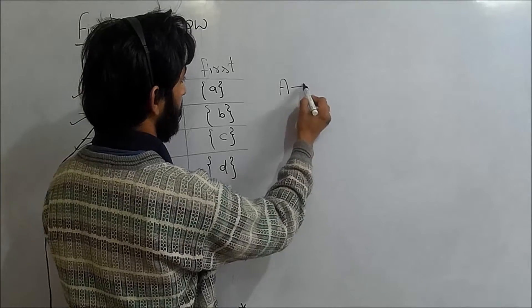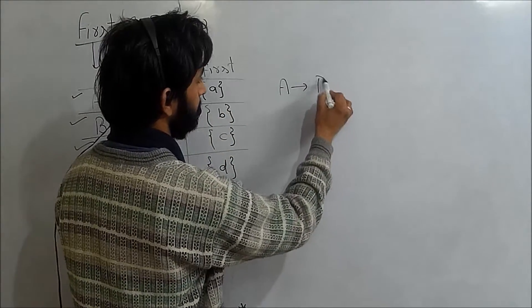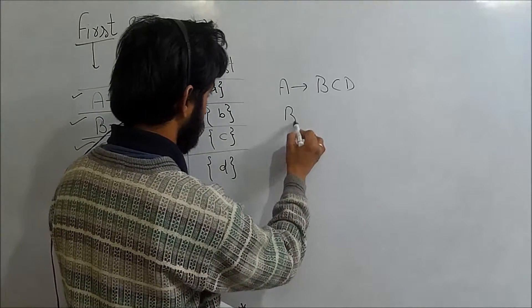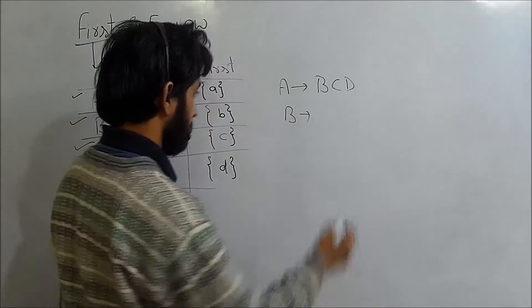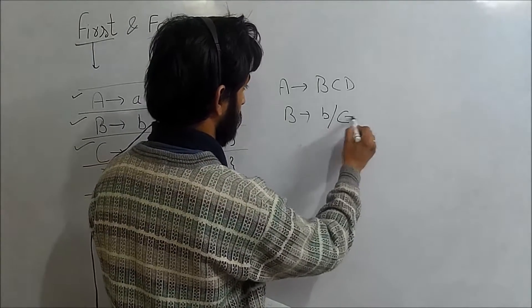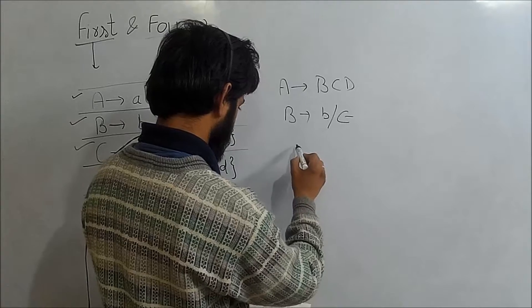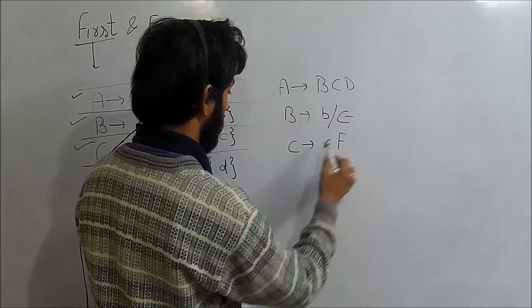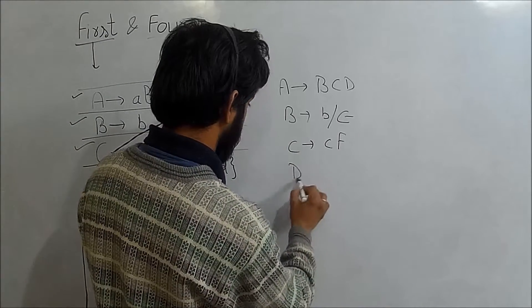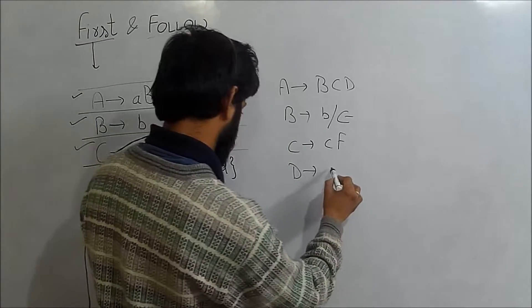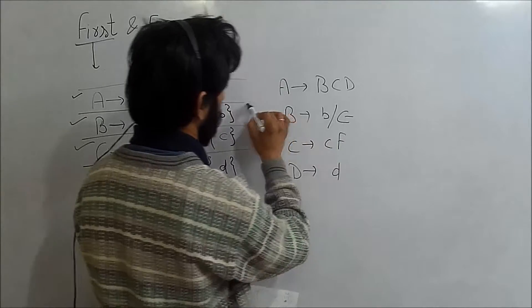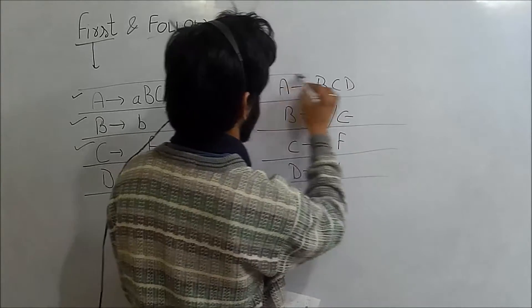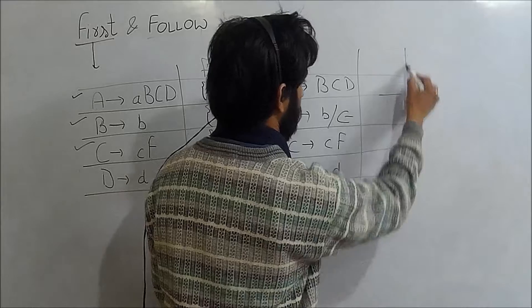Now let us modify the example. In the new grammar: A derives BCD, B derives 'b' or epsilon, C derives 'cF' or epsilon, and D derives 'd'. What will be the FIRST of A?